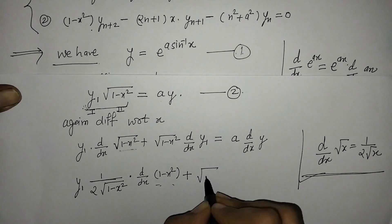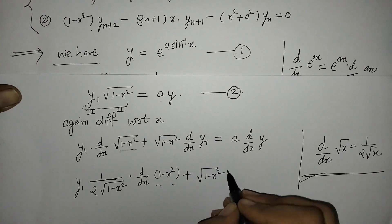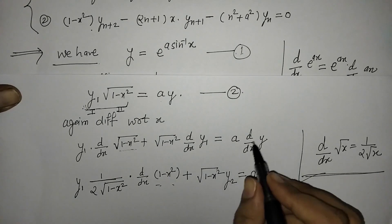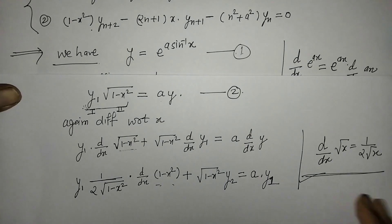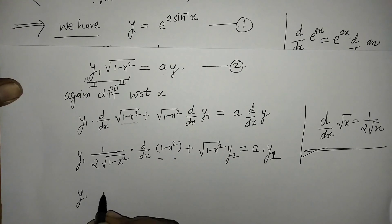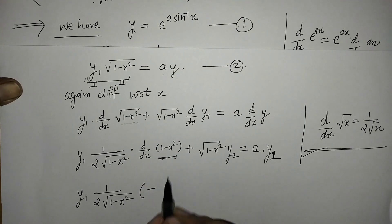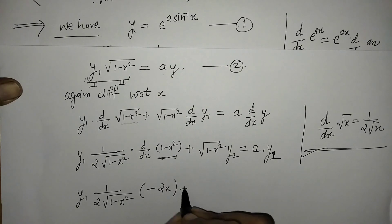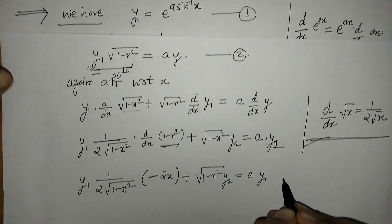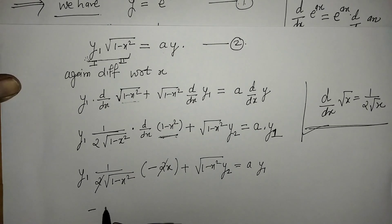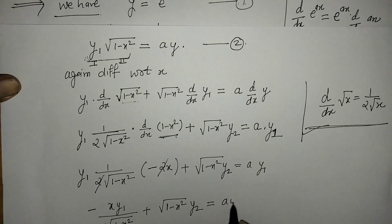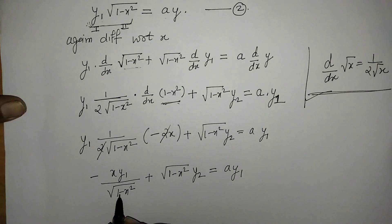Applying the product rule, we get y1 as it is, plus the root of 1 minus x square times derivative of y1, which is y2. Together with the derivative of the constant a times y, this gives us: minus x·y1 over √(1−x²) plus (1−x²)·y2 equals a·y1. We can now multiply this expression through by √(1−x²).